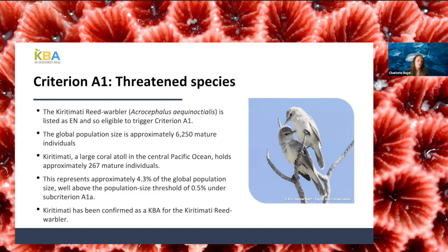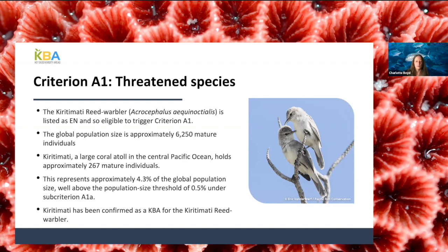As a brief example of criterion A1 in practice: the Curitamati Reed Warbler is listed as endangered on the IUCN Red List because of its restricted geographic distribution, making it eligible to trigger sub-criterion A1a. The global population size is estimated at approximately 6,250 mature individuals. The site population represents more than 4% of the global population — well above the 0.5% threshold under A1a. Following confirmation of presence, including at least five reproductive units (breeding pairs for this species), Curitamati has been confirmed as a KBA for the Curitamati Reed Warbler.